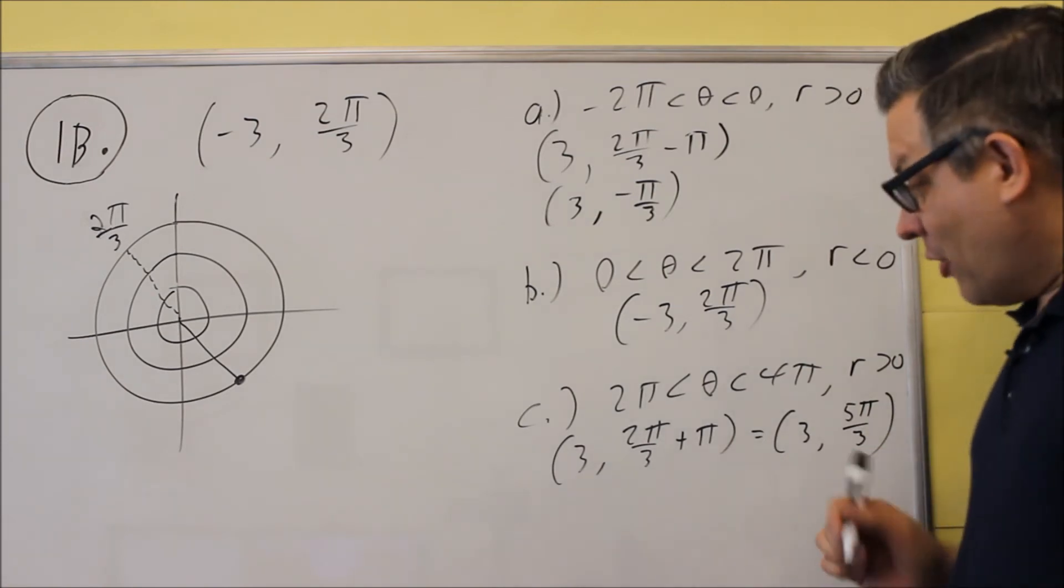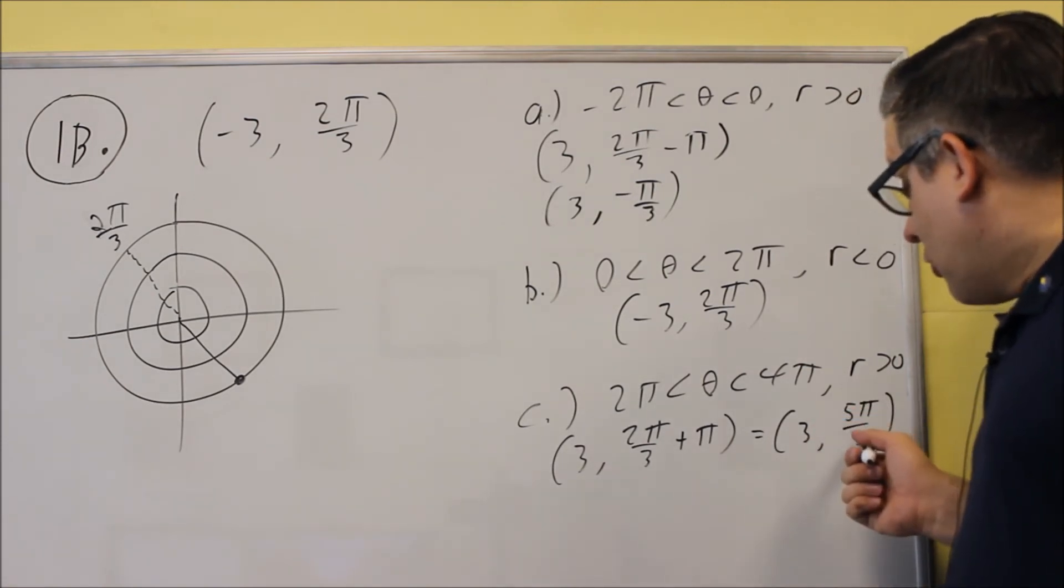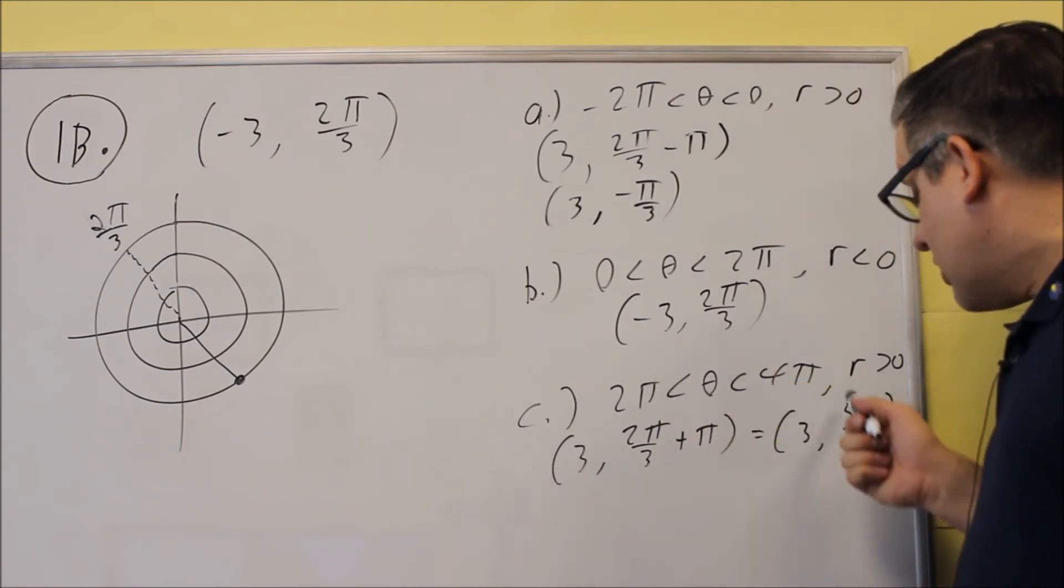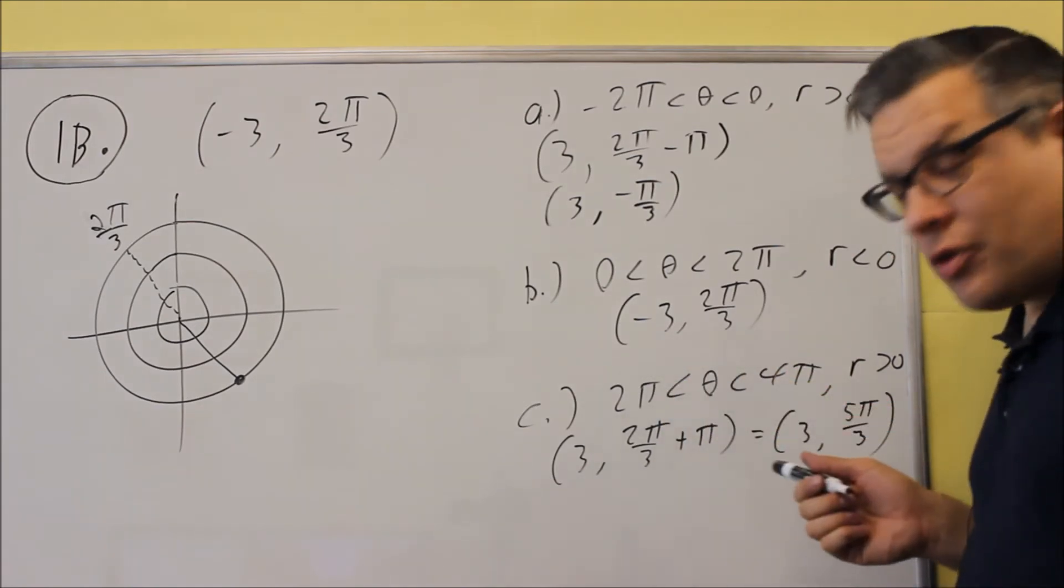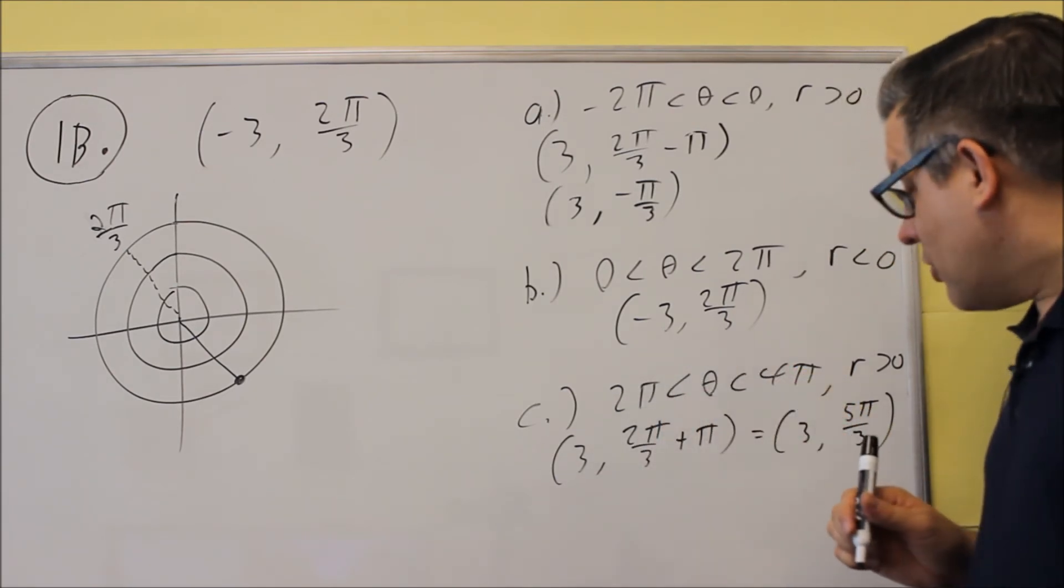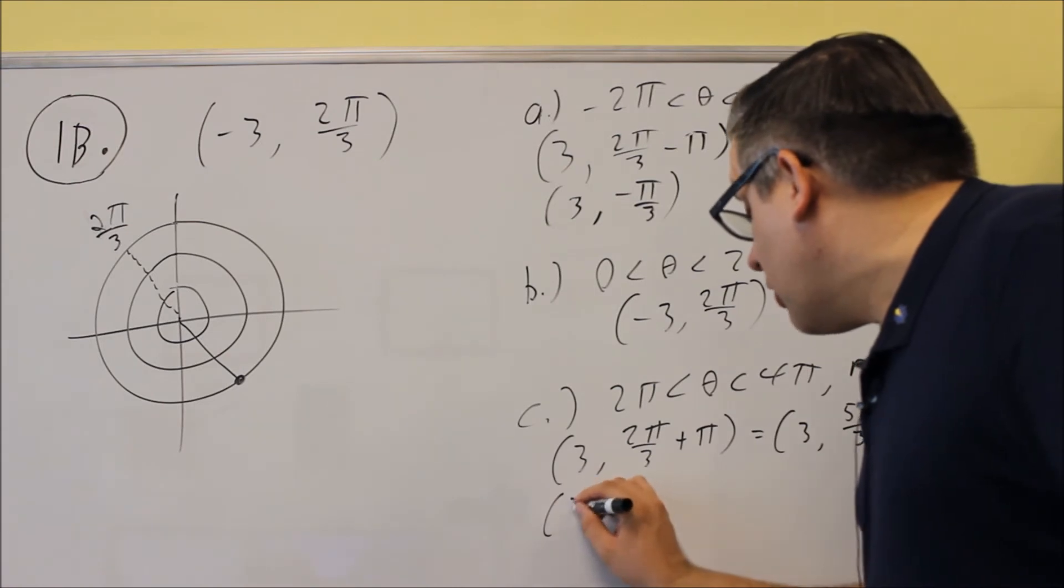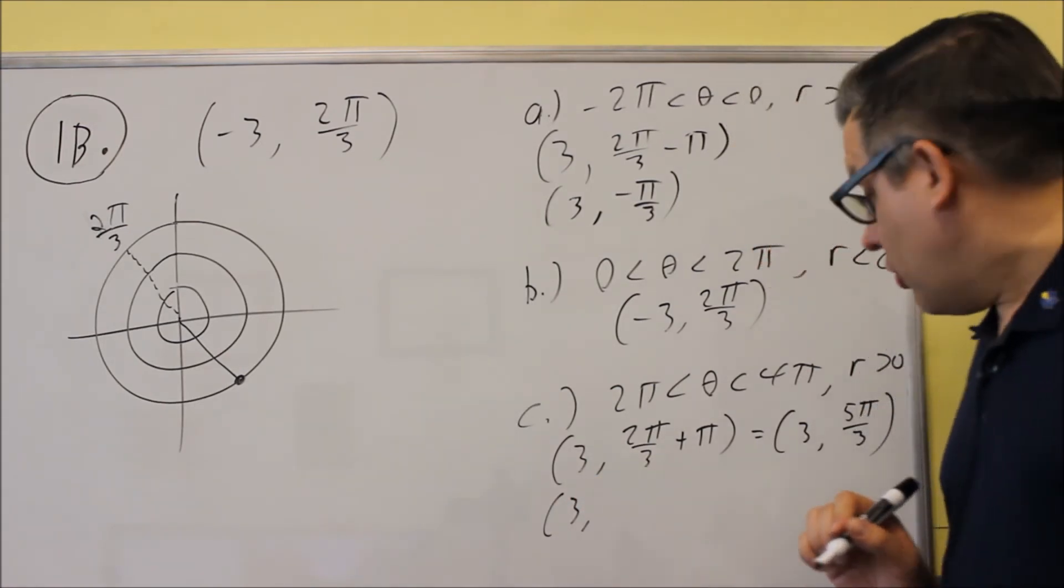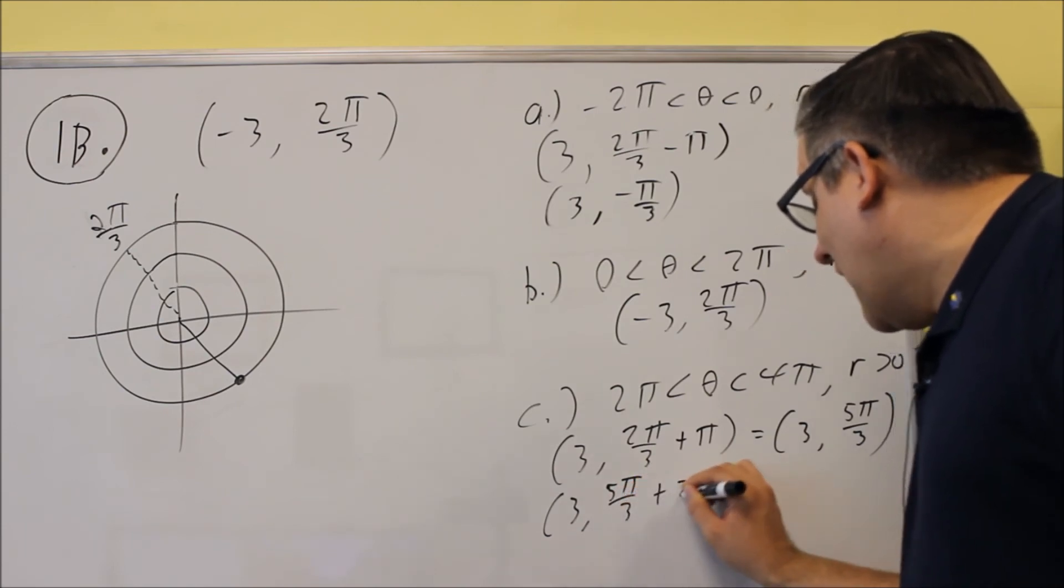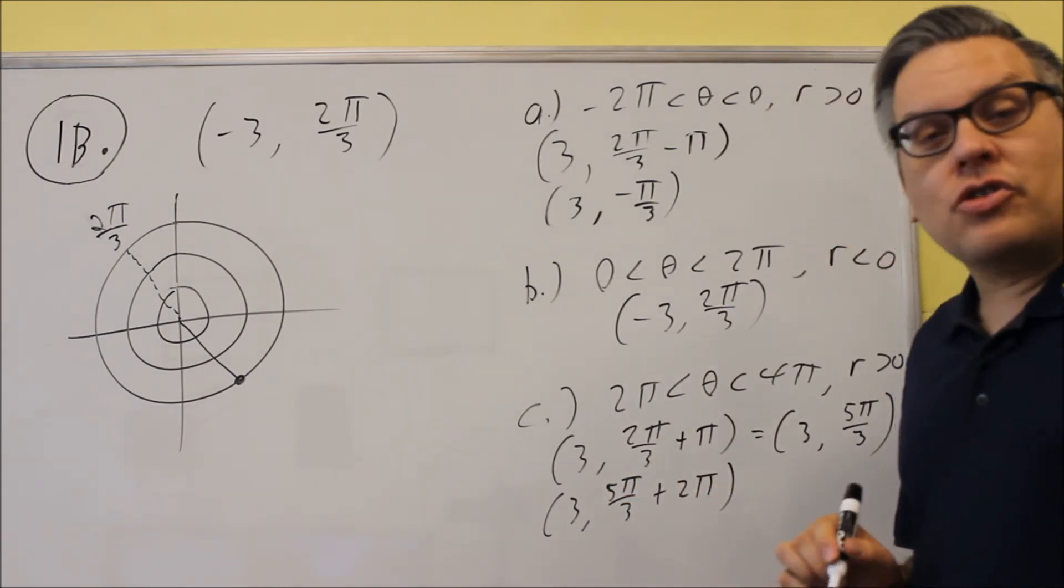Okay, now we're not done yet, because 5π over 3 is not between 2π and 4π, because the fraction 5 thirds is 1 and 2 thirds, that's not above 2. So we have to do one more step. We'll start with 3, we're not changing that one at all. We're going to take 5π over 3, and we're going to add a 2π to it.